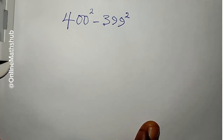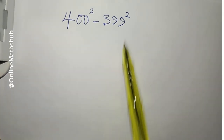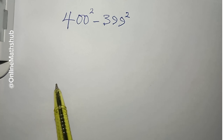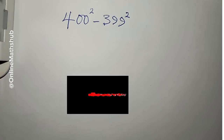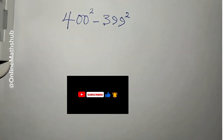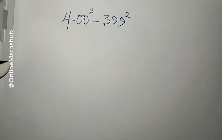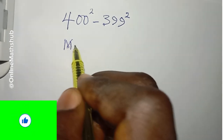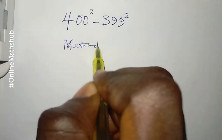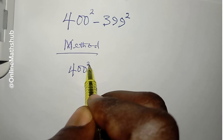Hello friends, welcome back. We're going to be solving this question without the use of a calculator. I'm going to show you two methods you can use to solve this, and also how to solve other similar problems. Once you follow the trick we're exploring in this video, you'll be able to solve problems like this even without a calculator. Let's look at the first method. What we have is 400 squared minus 399 squared.